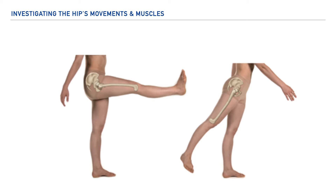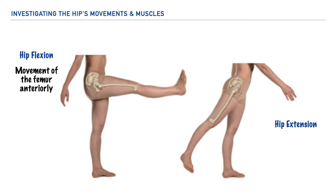In total we have six primary movements of the hip, and the first two that we'll take a look at include hip flexion and hip extension. As shown here in our first picture to the left, we have hip flexion, which involves movement of the femur anteriorly, and to our right we have hip extension pictured, which involves movement of the femur posteriorly.